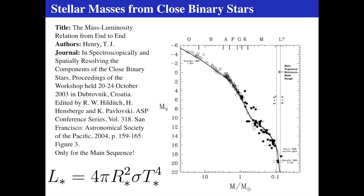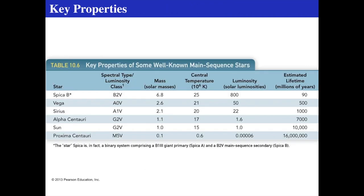We can put the absolute visual magnitude on this graph and see an enormous variation — from about one percent of the luminosity of the Sun all the way up to millions of times the luminosity of the Sun for the O-type stars. Here are some familiar stars showing their masses, central temperatures, surface temperatures, luminosities, and estimated lifespans.